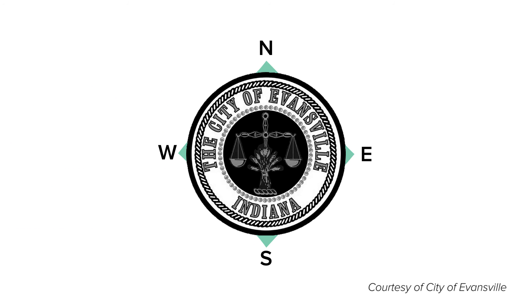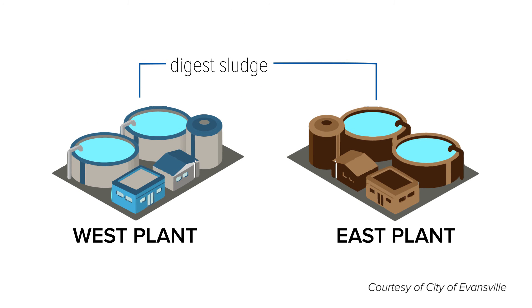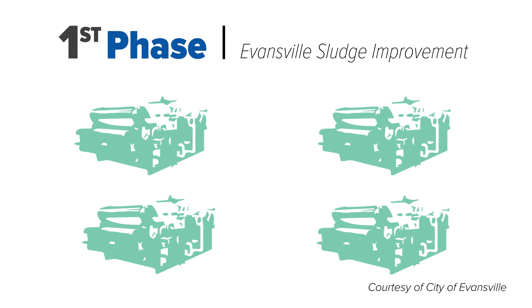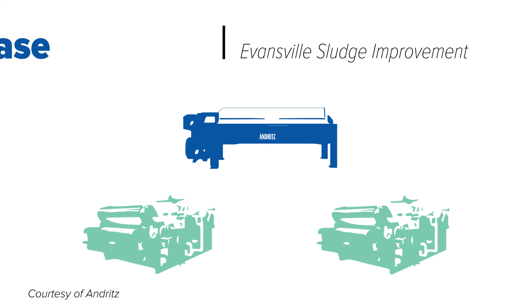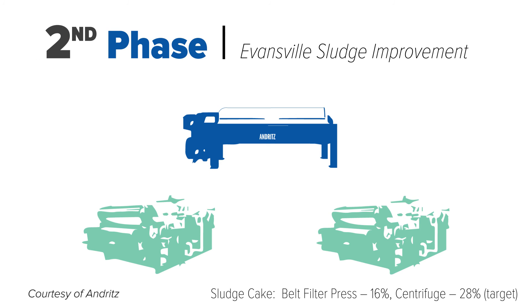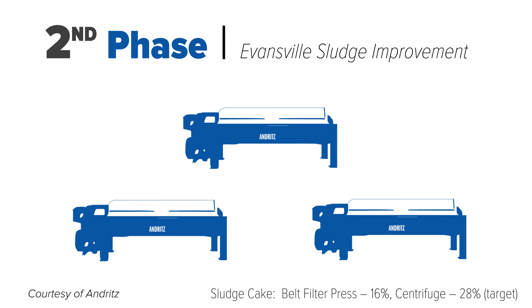The Evans Fields facility has two wastewater treatment plants: the east plant and the west plant. The digested sludge from the west plant is pumped to the east plant for dewatering. Currently they have four belt presses, and in the first phase of the improvement, the city will replace two of the belt presses with centrifuges. In the second phase, they will replace the remaining belt presses with two additional centrifuges.